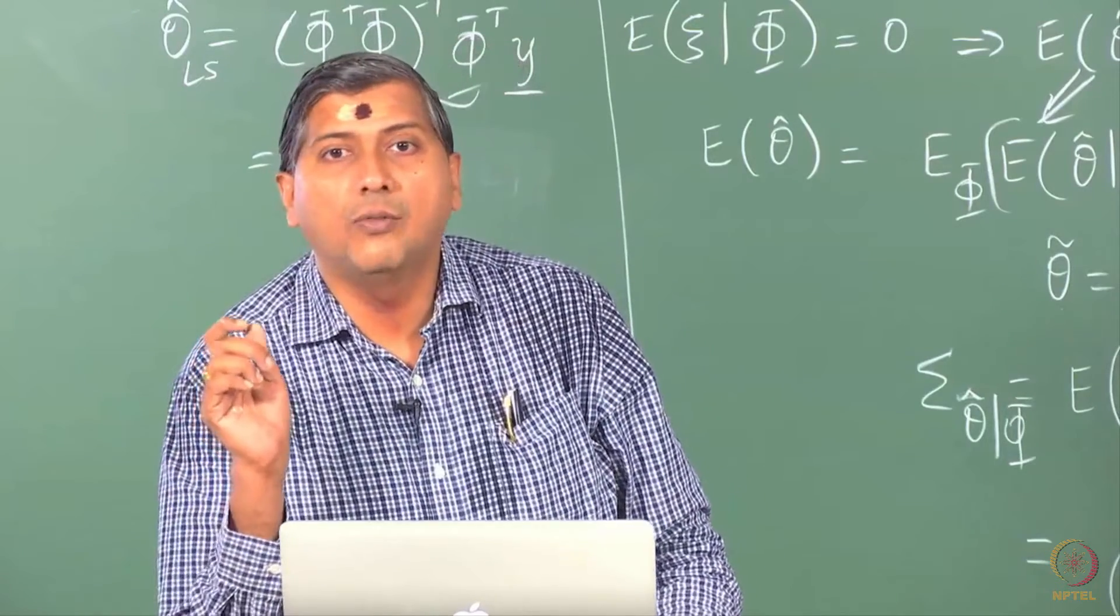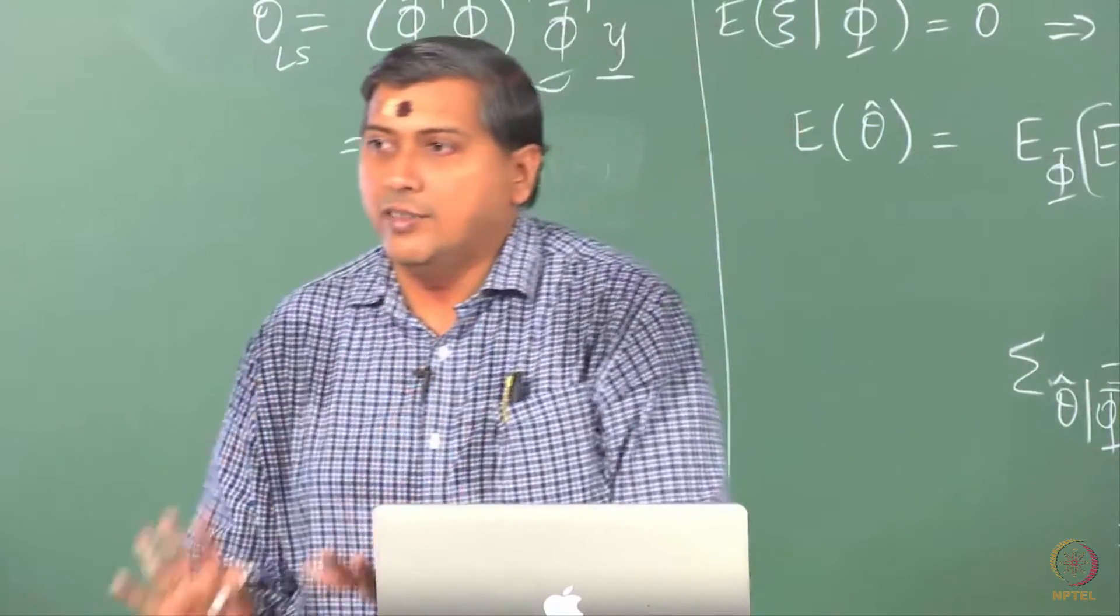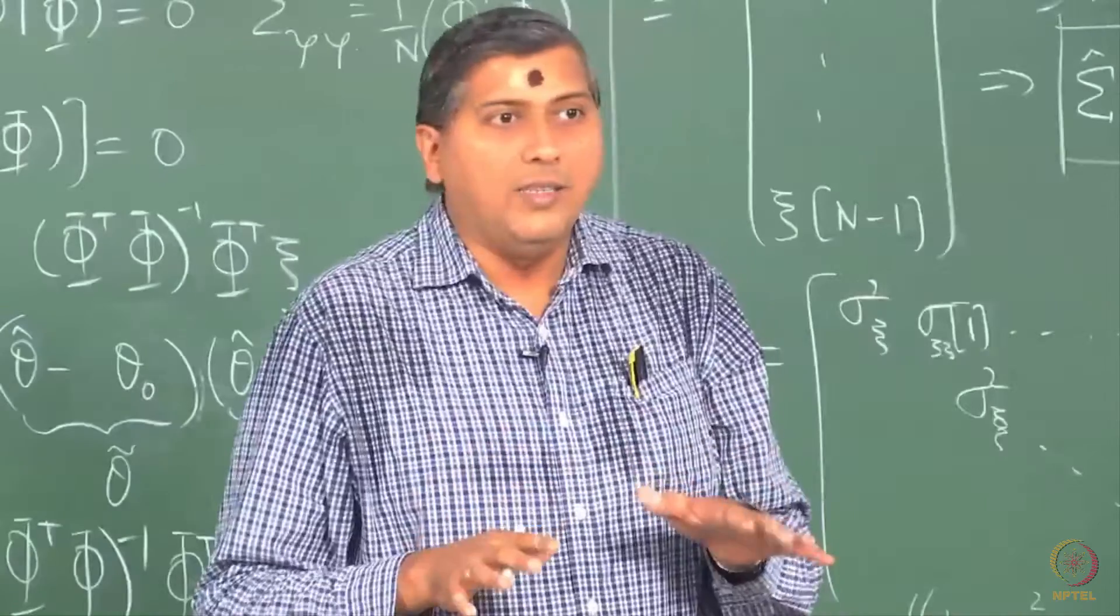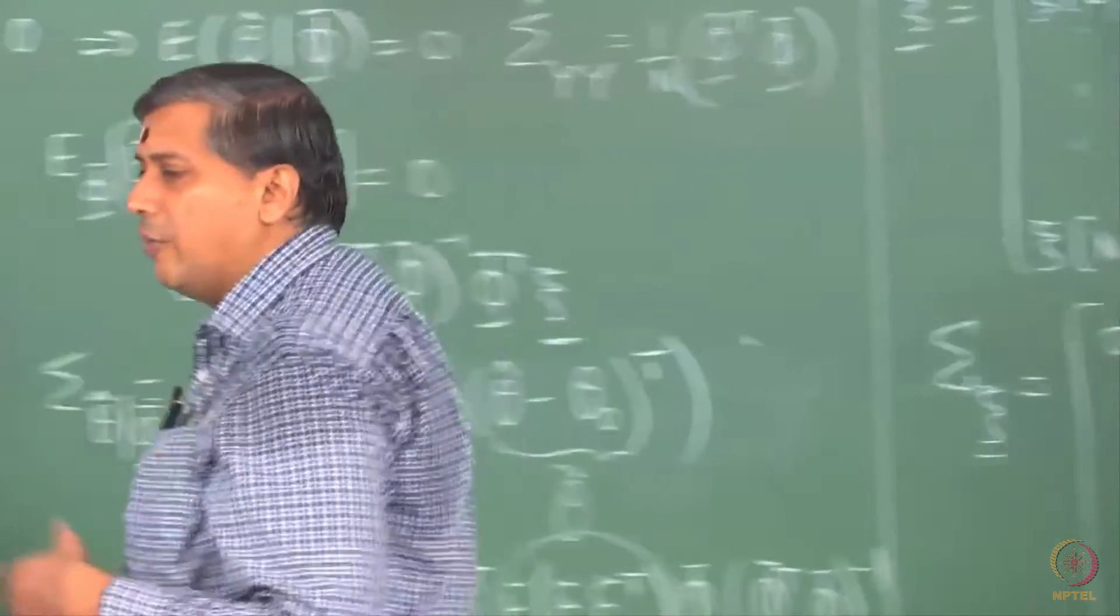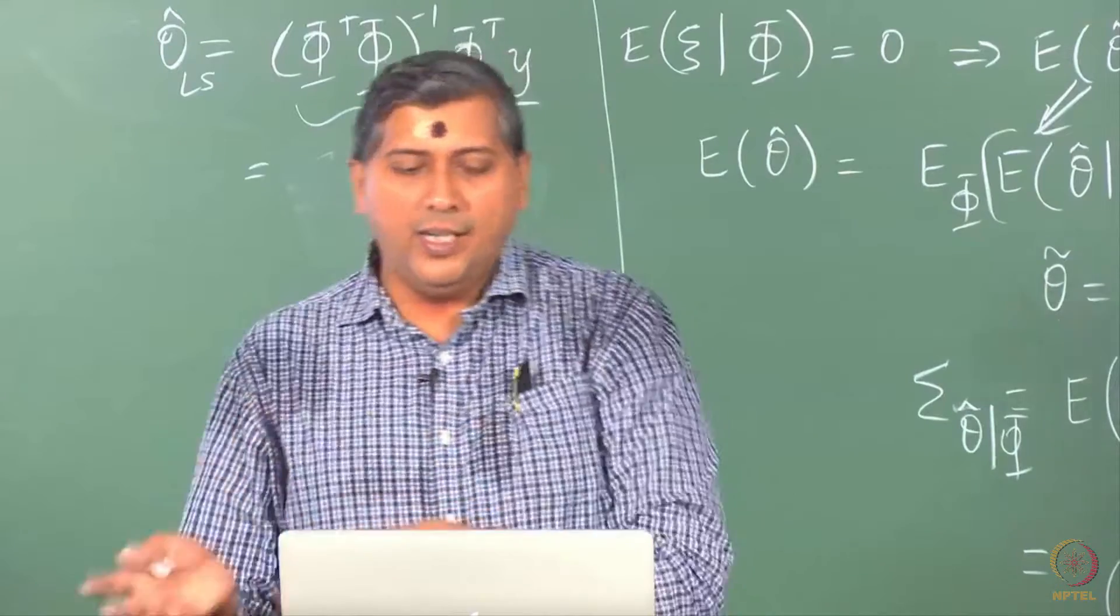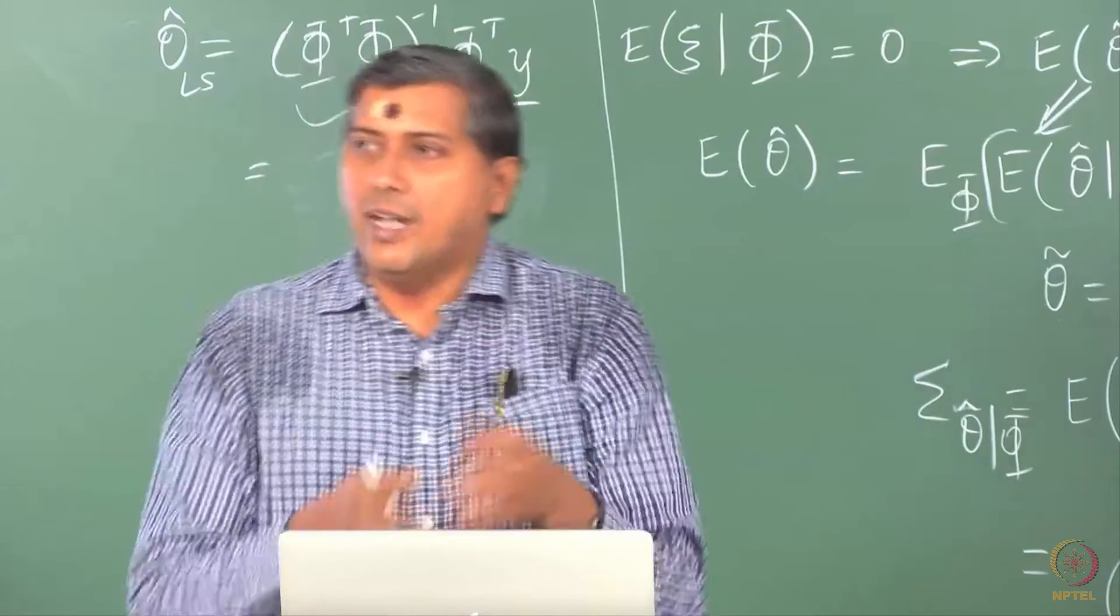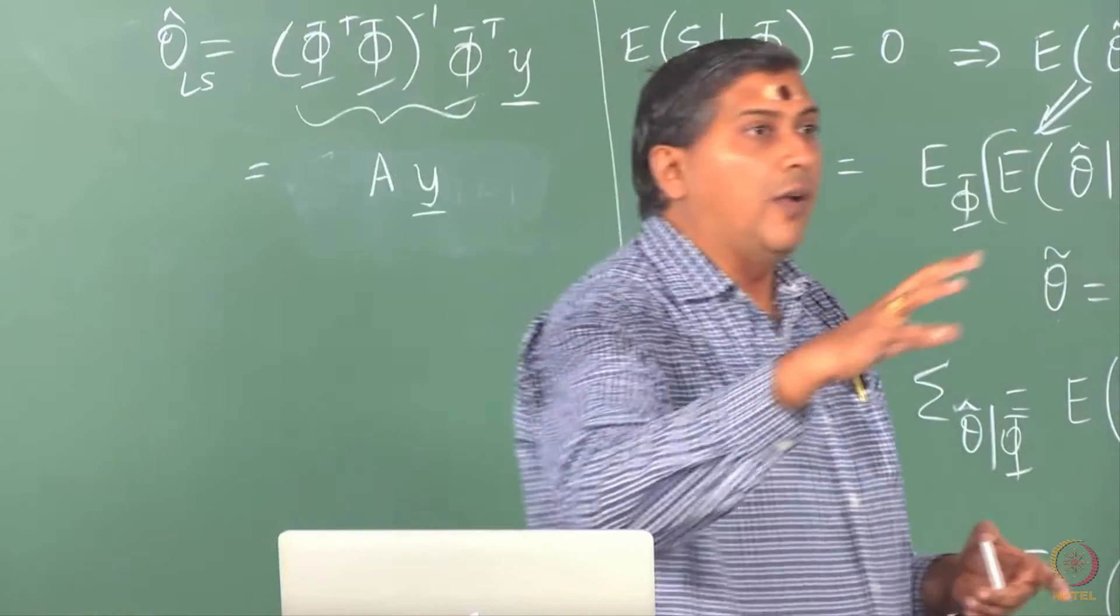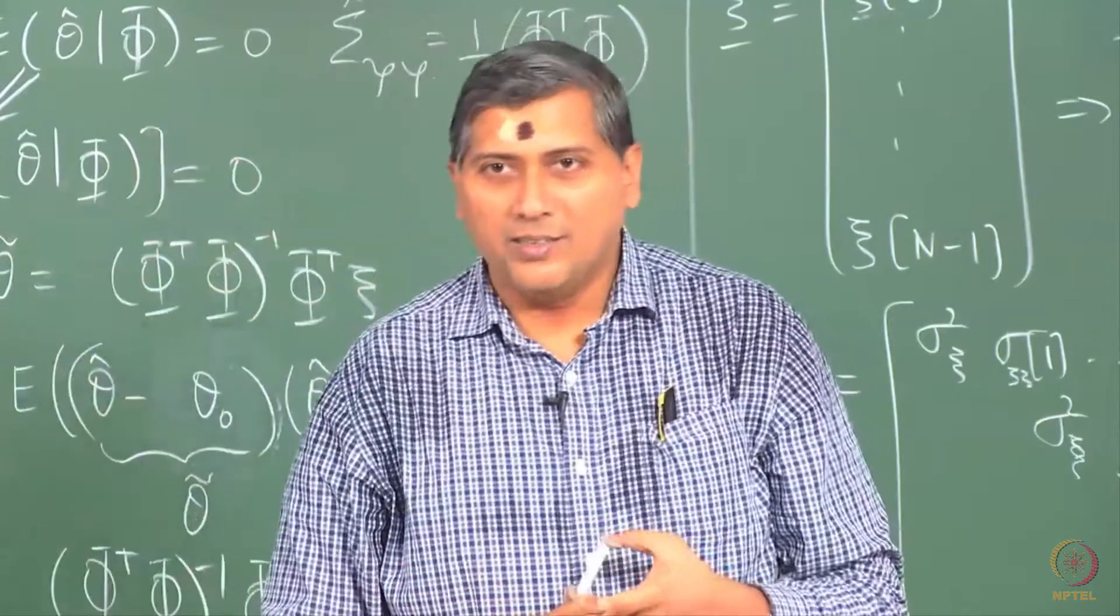But that is the fortune that we have with least squares. Although there are some restrictions, it says it is efficient only when things are white. It is consistent only when the regressors are uncorrelated with the residuals and all of that. Nevertheless, it gives you some benefit somewhere. Like in everything else in life, if you look at a car, car will have some features and some features may be absent. But then it depends on what you want. So likewise here, if you take an estimator, it has some features and not, but with some restrictions.